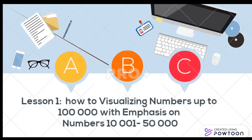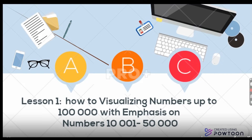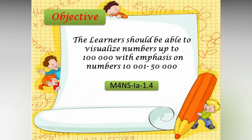Lesson 1. How to visualize numbers up to 100,000 with emphasis on numbers 10,000 to 50,000. Objective: the learner should be able to visualize numbers up to 100,000 with emphasis on numbers 10,000 to 50,000.